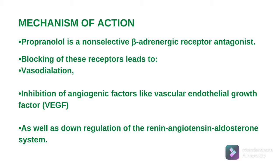Blood pressure rise होने का एक reason है कि kidney renin secrete करती है। Renin आगे angiotensin 1, angiotensin 2, और aldosterone की secretion को increase कर देता है, vasoconstriction होती है, blood flow restrict होता है, और blood pressure rise होता है। Propanolol renin-angiotensin system को inhibit कर देती है, aldosterone secretion stop होती है, vasodilation हो जाती है, blood vessel dilate हो जाती है, और blood pressure control हो जाता है।